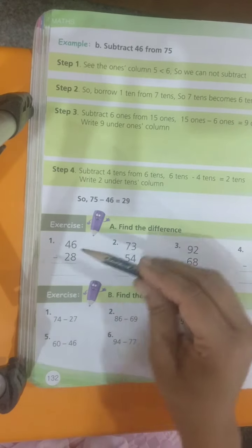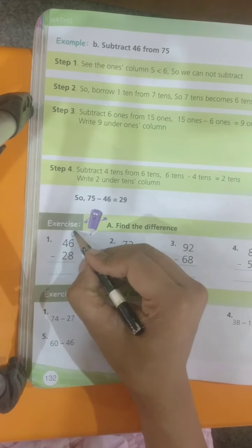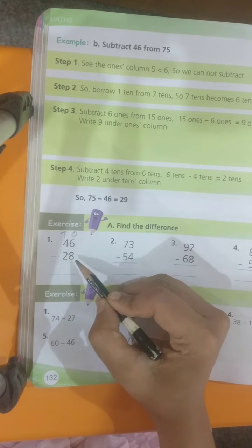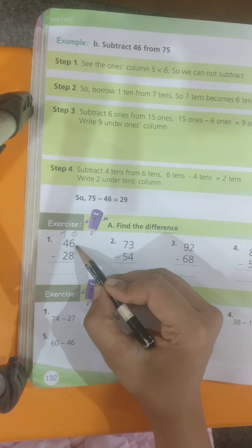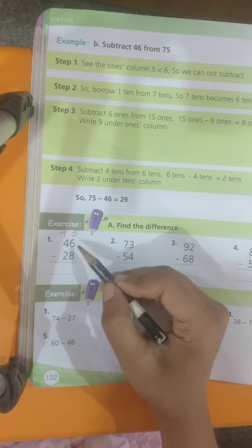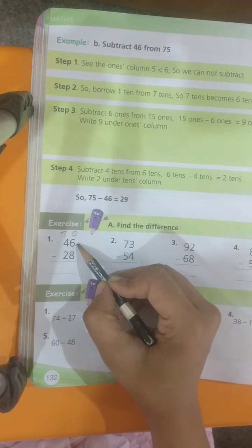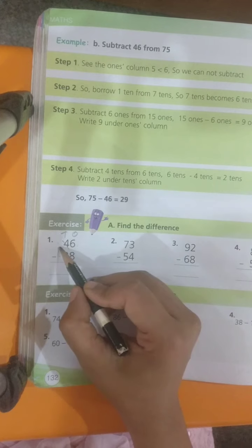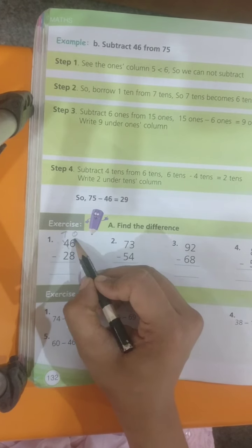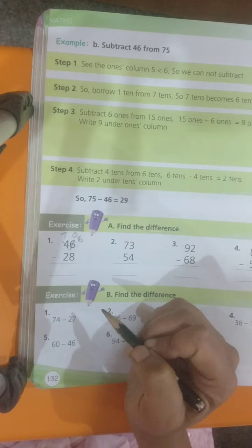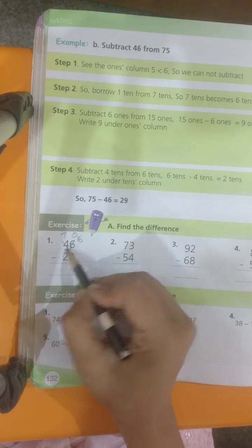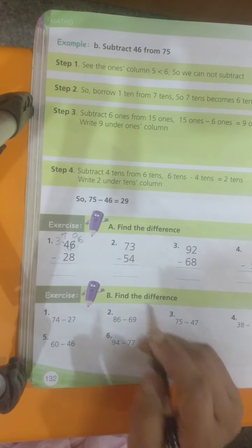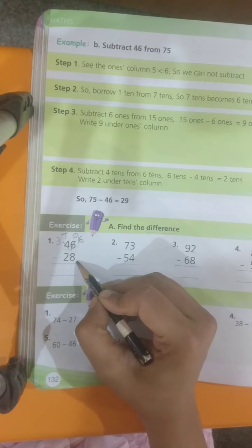You can see the first one. First, you are taking from 1's place and then 10's. Here in 1's place, you have 6 minus 8. 6 is small number, 8 is big number. So, you have a small number on the top. You should go to your neighbor and ask 1 from him. So, 4 when it gives 1 to 6, 6 becomes 16. 4 becomes 3 because it gave 1 to 16.